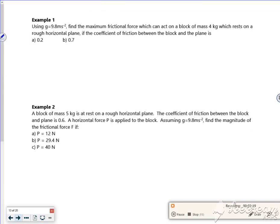So there you go. Right, so let's do an example then. So this says, using G as 9.8, find the maximum frictional forces that can act on a block of mass 4 kg, which rests on a rough horizontal plane. We've got different coefficients of viscosity.